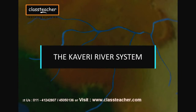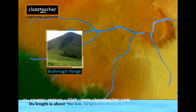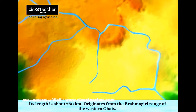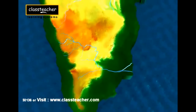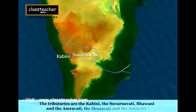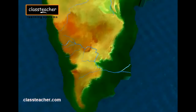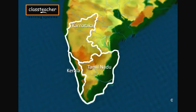The Kaveri rises in the Brahmagiri range of the Western Ghats, flows for about 760 km, and reaches the Bay of Bengal. It is joined by the Kabini, the Suvarnavati, the Bhavani, the Amravati, the Hemavati, and the Arkavati. The Kaveri basin covers parts of Karnataka, Kerala, and Tamil Nadu.